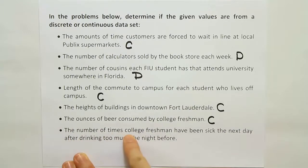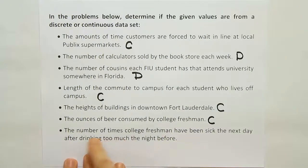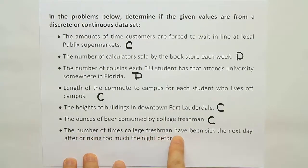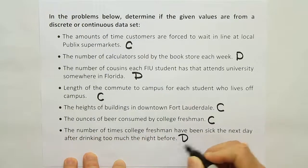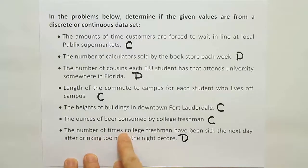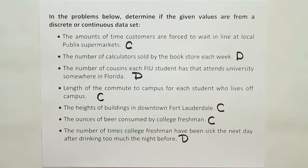And the last case: the number of times college freshmen have been sick the next day after drinking too much the night before. If you're counting up how many times your buddy was sick from drinking too much, that would certainly be a count, and I would say that data is discrete. However, if you were to measure the volume of vomit that the person threw up, that would be continuous — but that's a pretty disgusting thought.